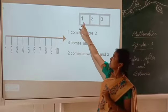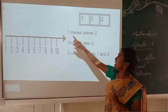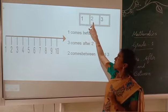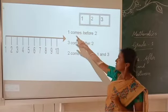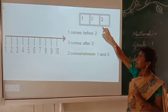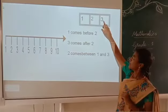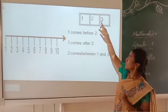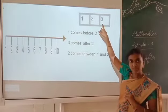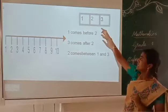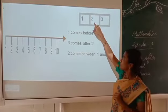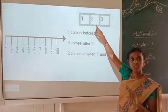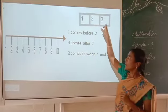What is the position of number 1? 1 comes before 2. What is the position of number 3? The number 3 comes after 2. The number 2 comes between 1 and 3.